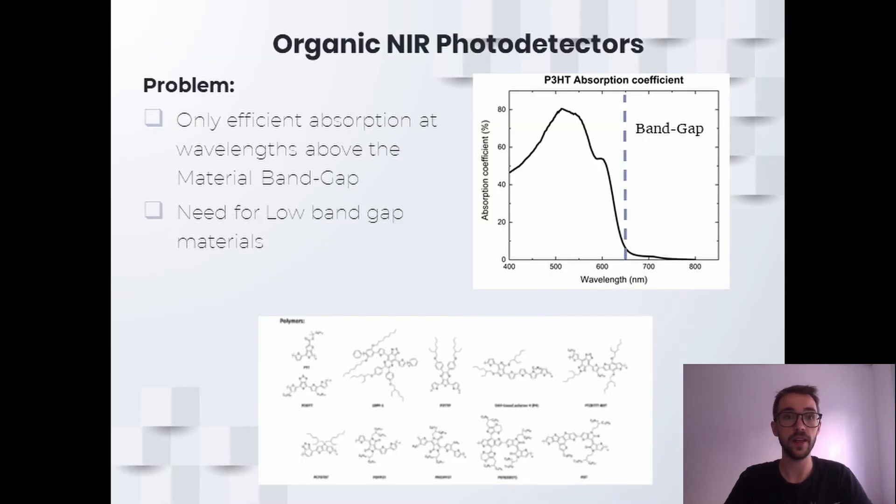As we can see in this absorption curve, organic materials only absorb efficiently above their bandgap, which means that for near-infrared absorption we need low bandgap materials that can be difficult to manufacture due to their chemical complexity, as you can see in the molecules here below.